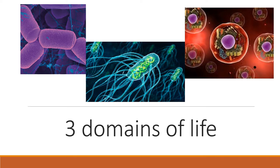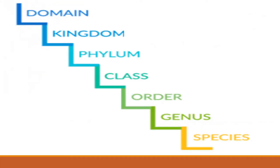Hello students. In this presentation we're going to talk about the three domains of life. Typically when we look at the domains of life, it's the highest hierarchy, followed by kingdom, phylum, class, order, genus, and species. But for this video or presentation, we're just going to focus on domain.